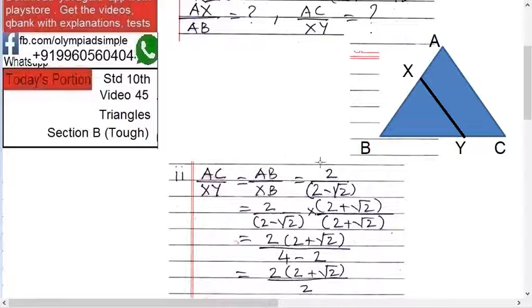But AB upon XB, we have already found out, 2 upon 2 minus root 2. So, solve this. Rationalize it.